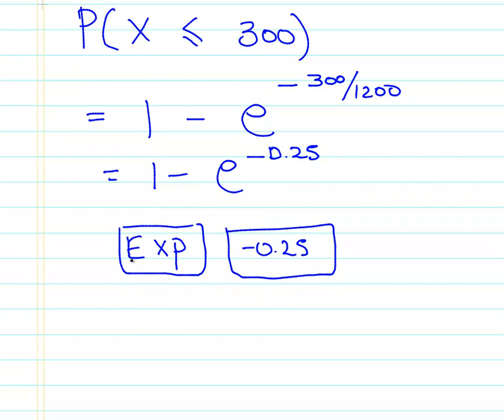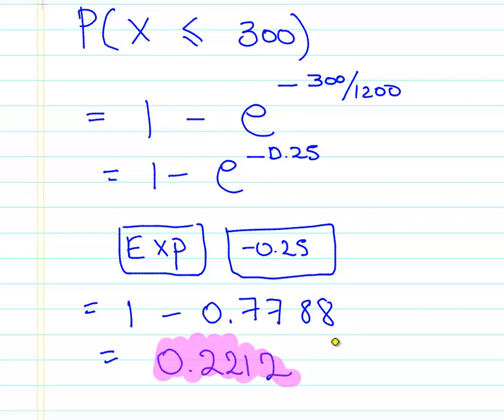And then subtract that from one. So let's just calculate that out. That is equal to 1 minus 0.778, roughly. So that is 0.2212. So that's our answer. The 22% approximately of components will fail within the first 300 hours. Seems like a lot, doesn't it? But there you go. So that's the first answer to the first one.